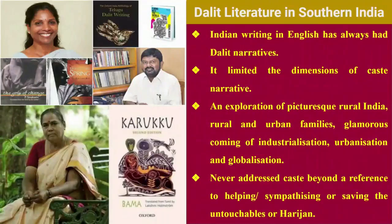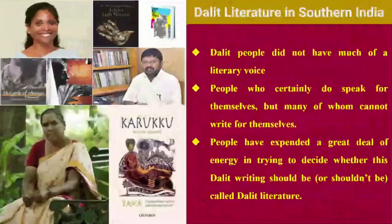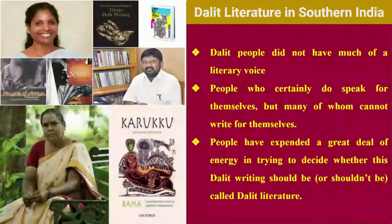This limits the dimension of a caste narrative in early Indian writing in English. Indian writing is often an exploration of rural India, rural and urban families, industrialization, urbanization and globalization. These narratives rarely address caste beyond a reference to helping, sympathizing or saving the untouchables. There really is such a thing as Dalit writing in Tamil, which did not used to be true until the past 20 or 30 years. Dalit people did not have much of a literary voice. Now they have voices representing millions of Dalit people. Some of these voices translated into English are contained in these kinds of books.